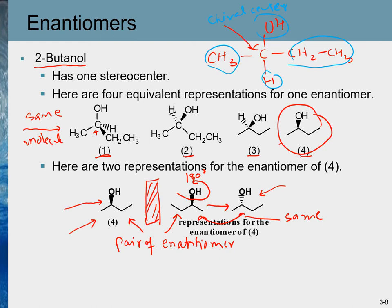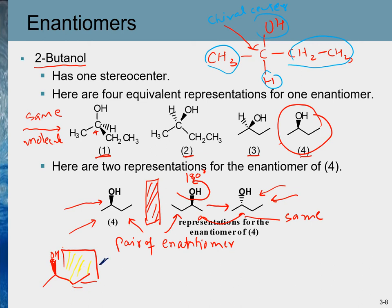The mirror image can also be oriented in different ways. We already know the wedge bond means the bond is coming towards us. If we rotate this molecule by 180 degrees, the ethyl group will point to the right side and the methyl group is on the left side, but the OH group is now away from us — represented by a dash bond. We can also place the mirror behind the molecule; the image would appear behind the mirror with the OH going away from us. These two are also mirror images of each other — a pair of enantiomers.